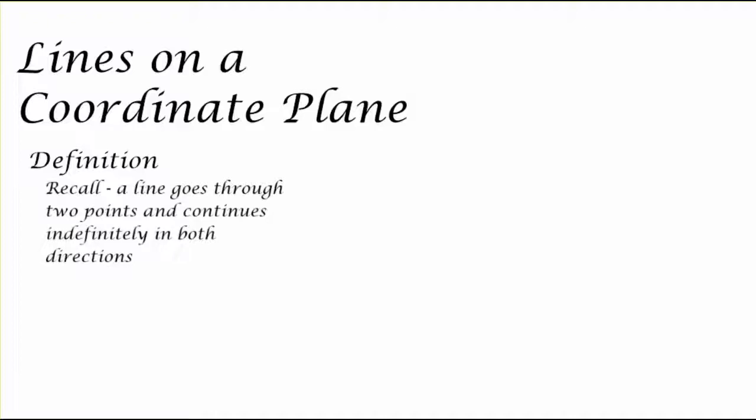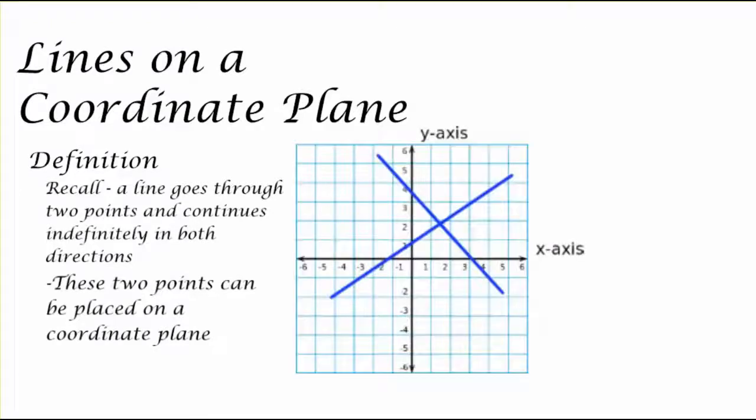By definition, recall that a line goes through two points and continues indefinitely in both directions. Now these two points can be placed on a coordinate plane, essentially putting our line on the coordinate plane as well.